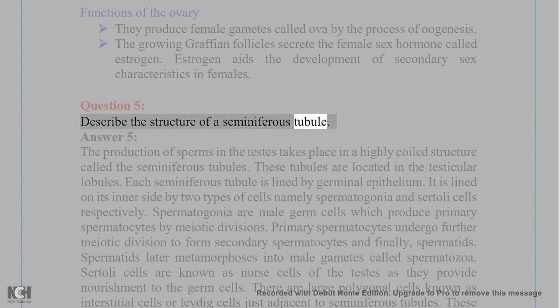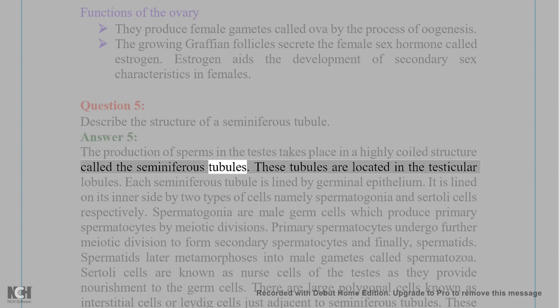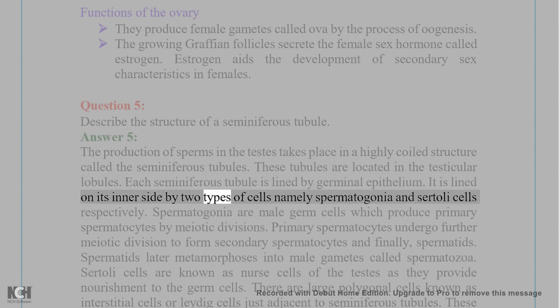Question 5: Describe the structure of a seminiferous tubule. Answer 5: The production of sperms in the testis takes place in highly coiled structures called the seminiferous tubules. These tubules are located in the testicular lobules. Each seminiferous tubule is lined by germinal epithelium, and on its inner side by two types of cells: spermatogonia and Sertoli cells.